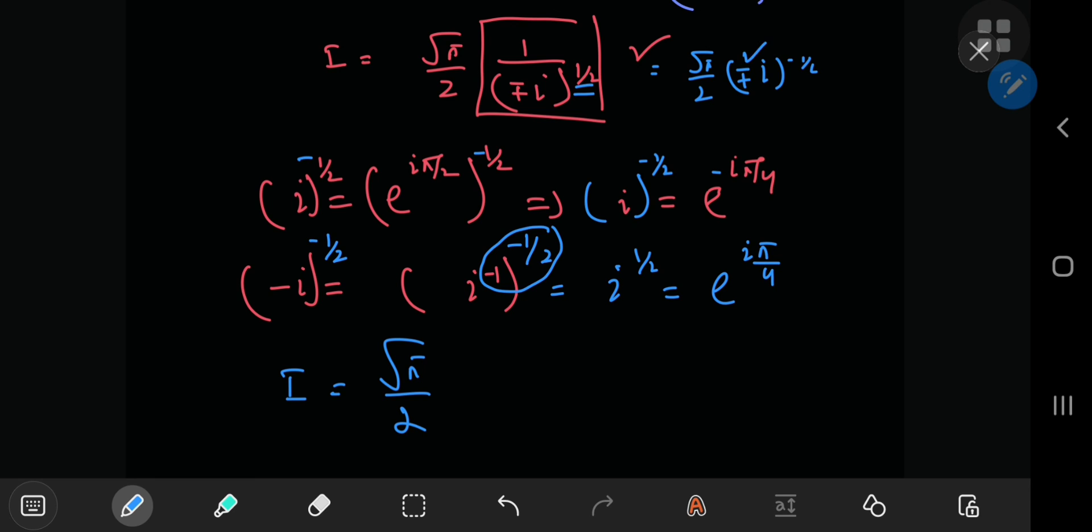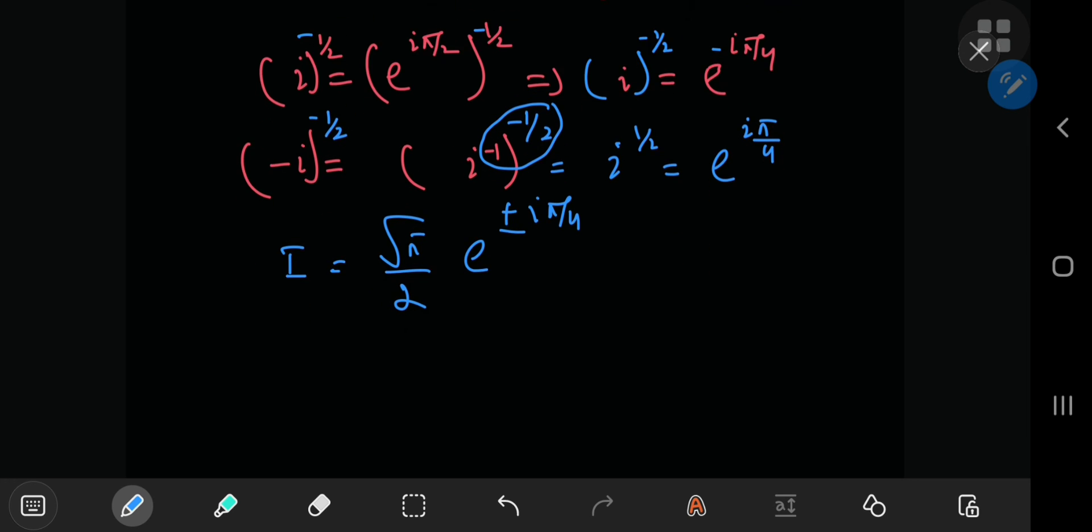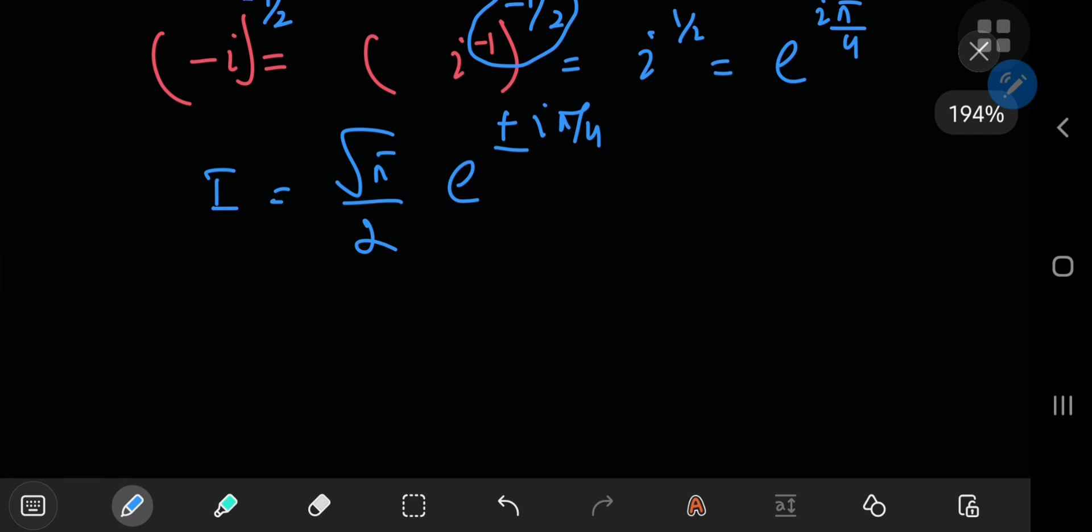the negative case here gave you e to the positive i pi by 4. And the positive case, the one down here, gave you e to the negative i pi by 4. So this was actually kind of fun, you know, the keeping track of the positive and negative signs. And now,